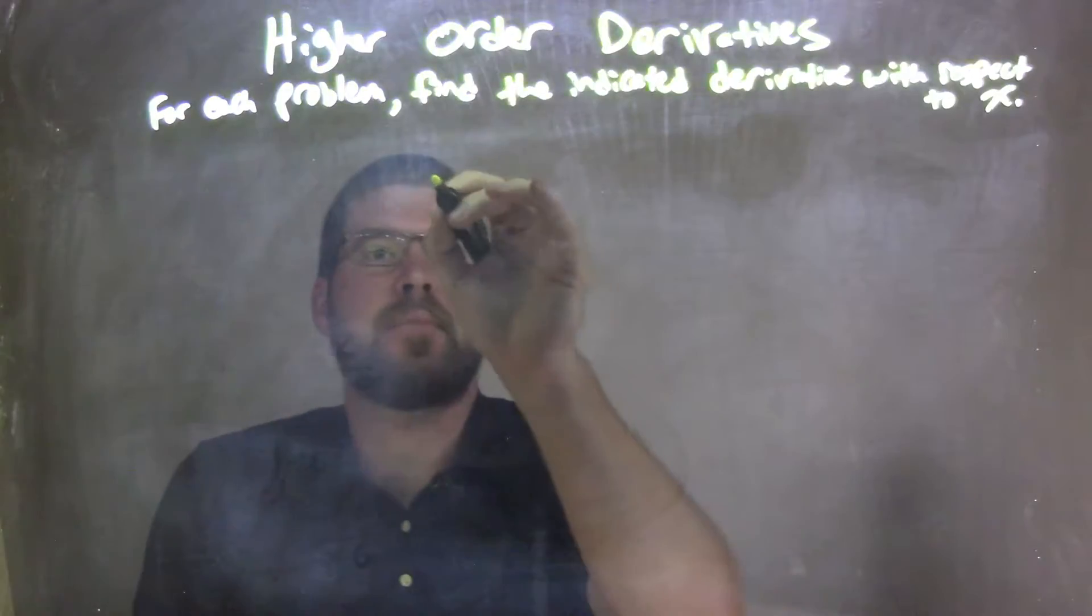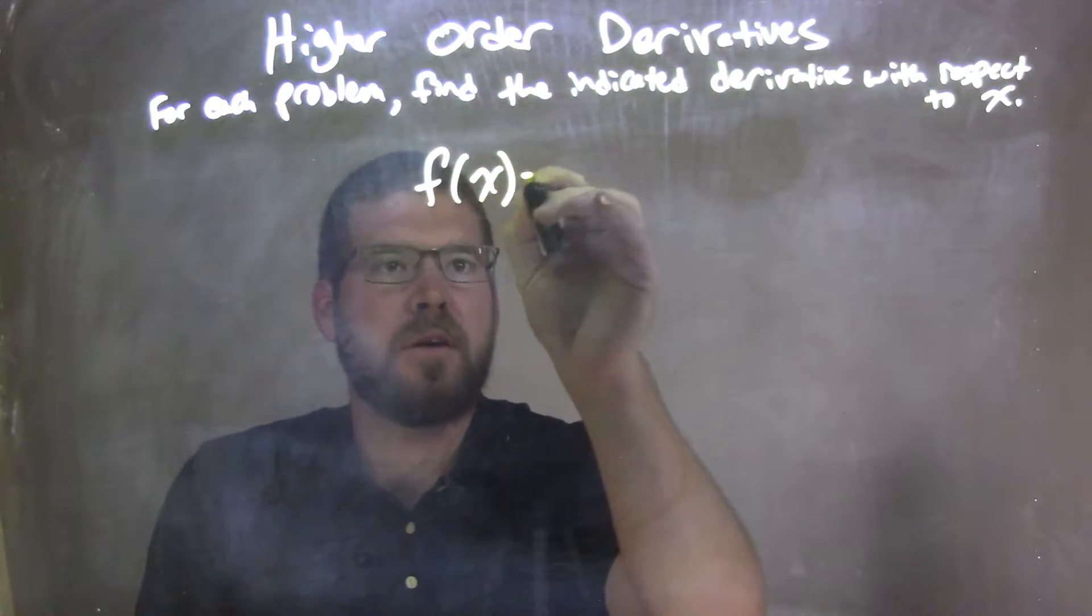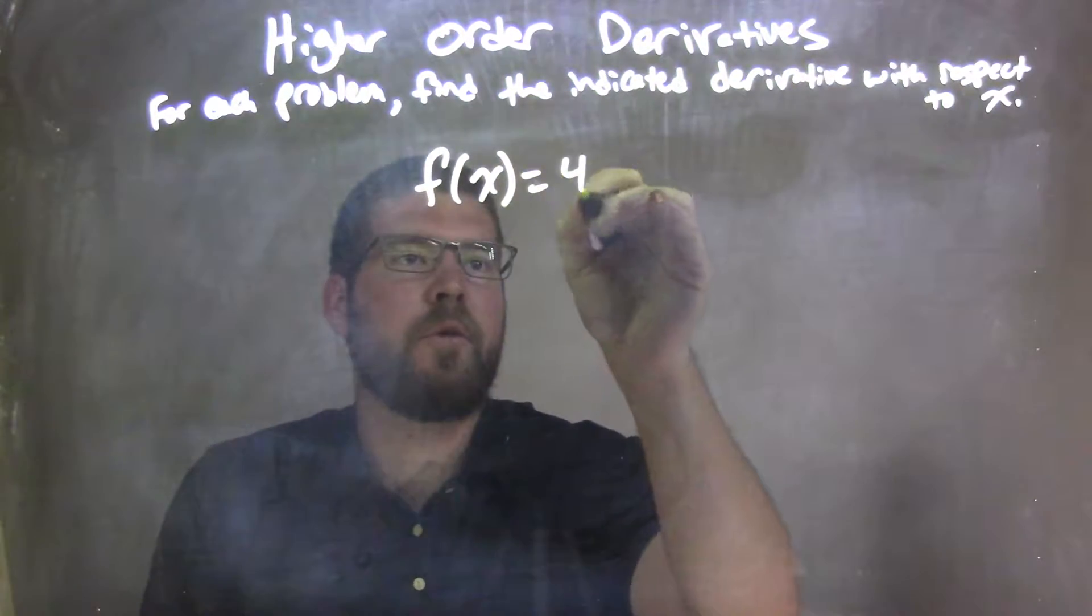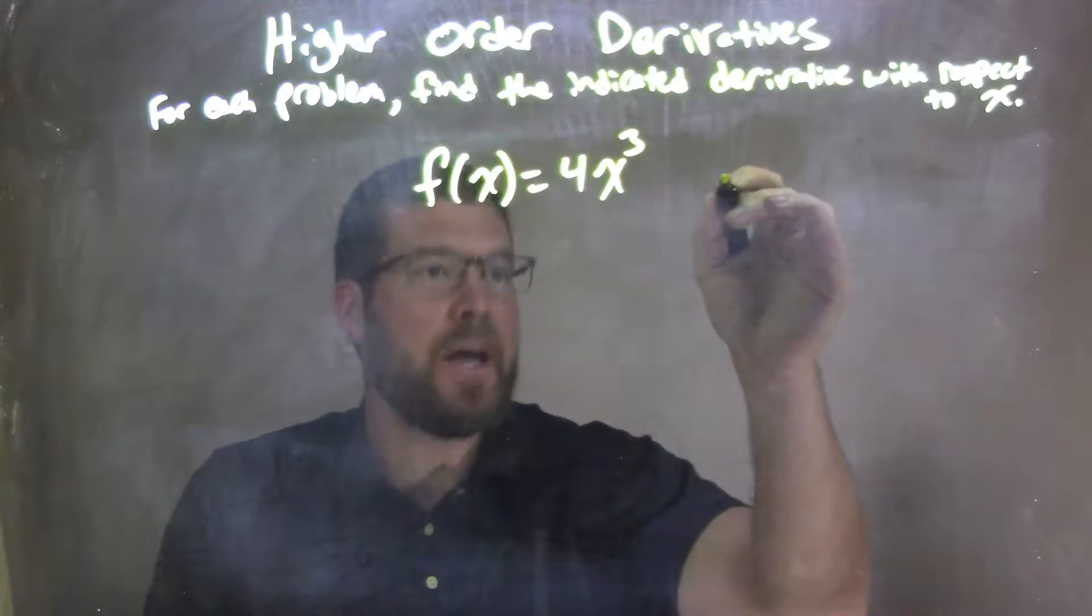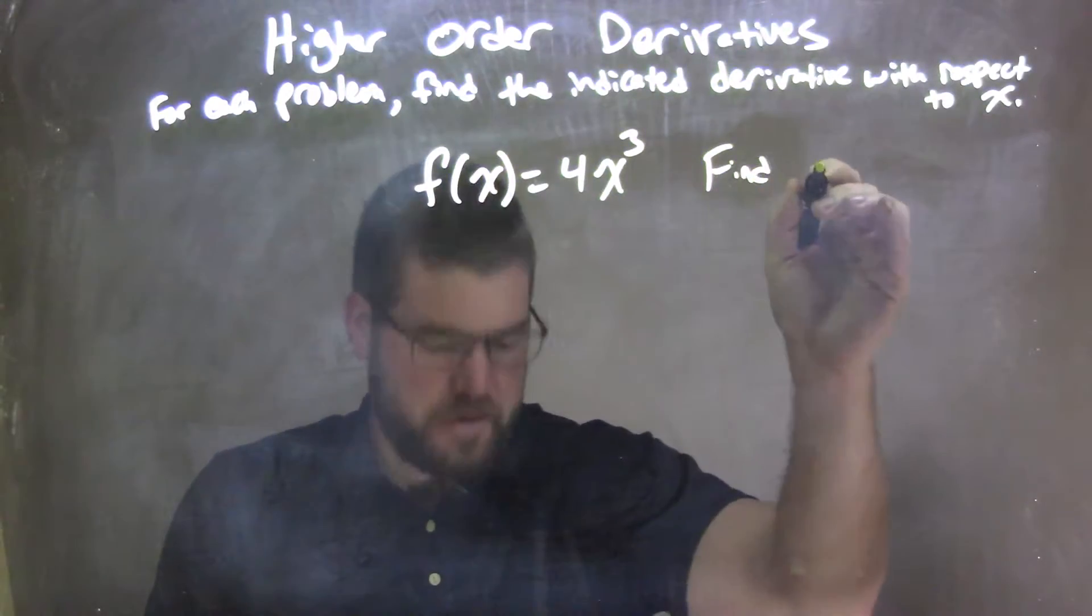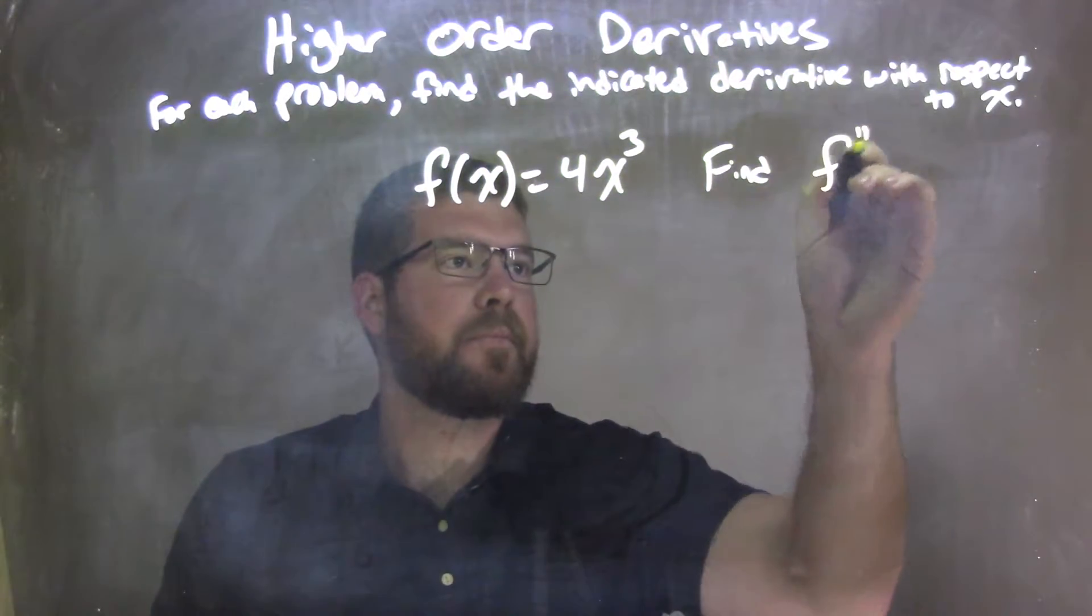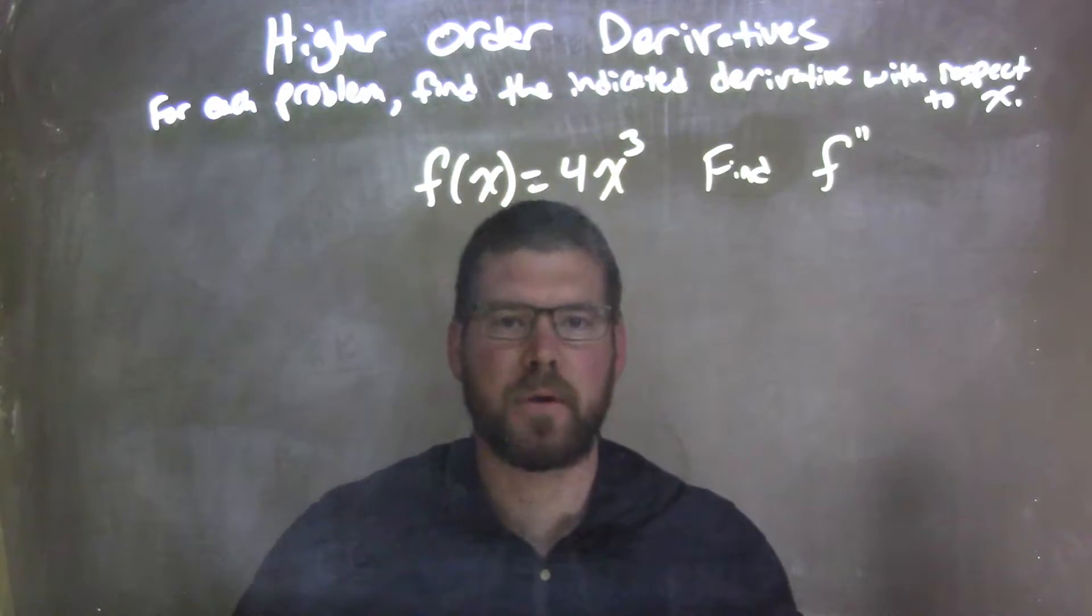If I was given this problem, f of x is equal to 4x to the third power, and we want to find f double prime, the second derivative.